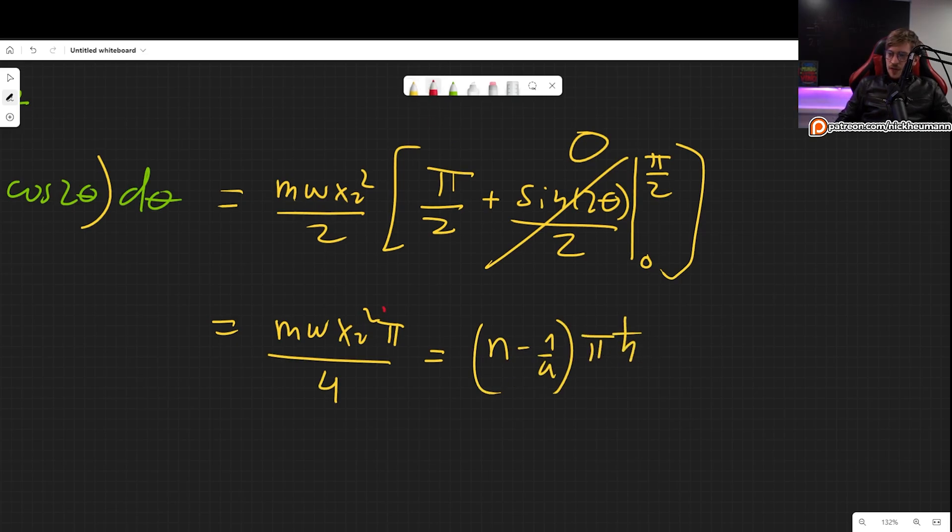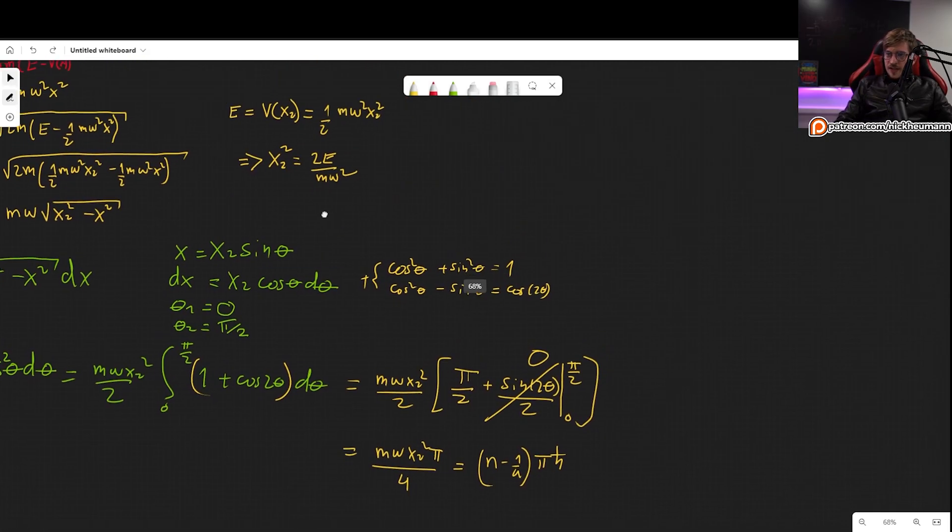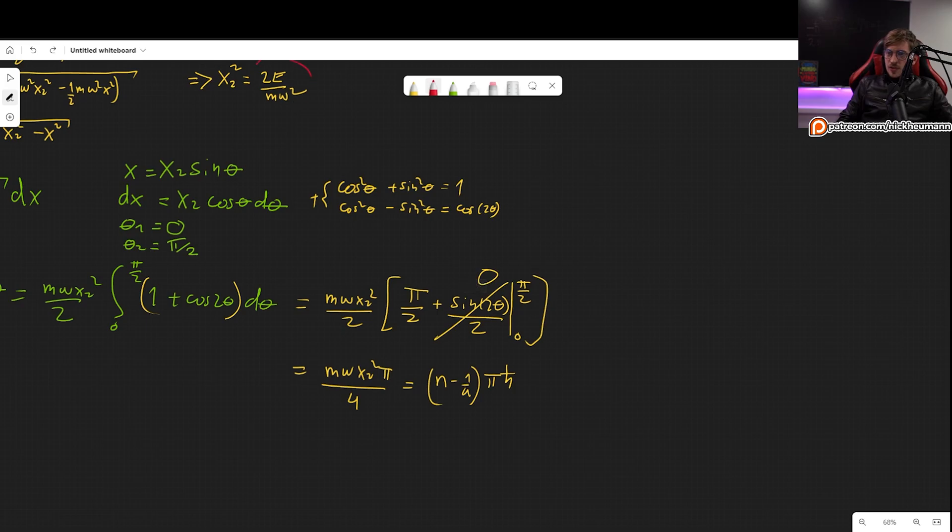Now finally we need to get rid of this x2 squared, which we don't really know what it is. So let's write it in terms of the energy. We simply used it as a tool for our calculations to be easier. So now this leads to m omega, I'm going to put all the constants here, and now plug in the value times 2E divided by m omega squared. This has to be equal to n minus 1 over 4 pi h bar.